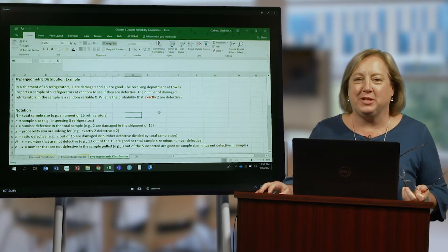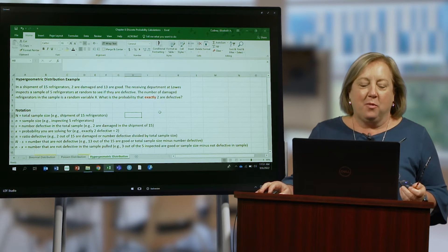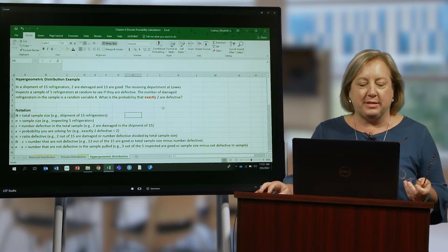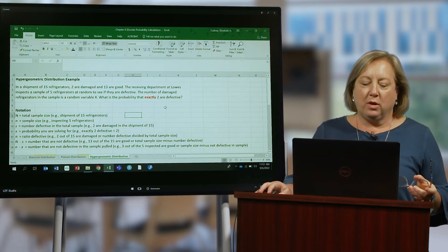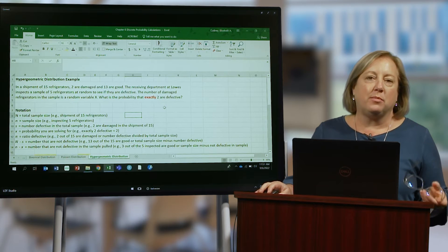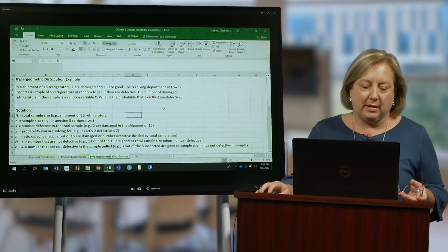In this example, we'll take a look at the hypergeometric distribution. With a hypergeometric distribution, it is a special type of discrete distribution where we're looking at discrete information, typically the number of damaged or defective products.